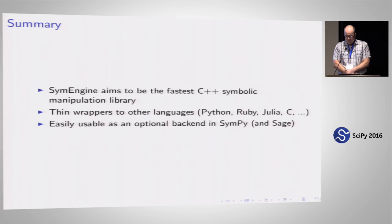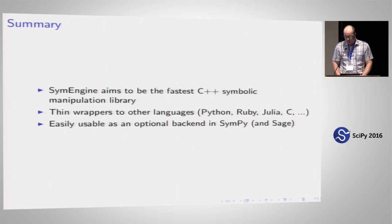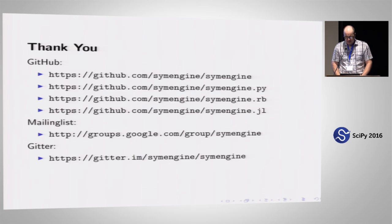The last benchmark is generating equations of motion from PyDy. This swaps out the core of SymPy and uses SymEngine as the core. Most of the code is written in Python but for the core part we switch to SymEngine. At N equals 50 it takes around 15 minutes with SymPy only, but it goes down to 14 seconds with SymEngine — about 60 times faster. The slope is the same so the complexity is the same, but with a dramatic constant speedup. Summary: SymEngine aims to be the fastest C++ symbolic manipulation library, with thin wrappers to Python, Ruby, Julia, and C, and an optional fast backend for SymPy and Sage.